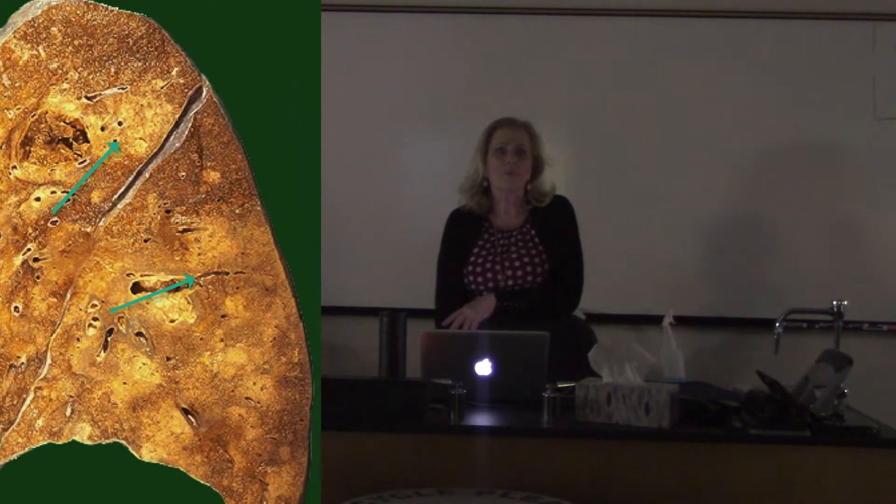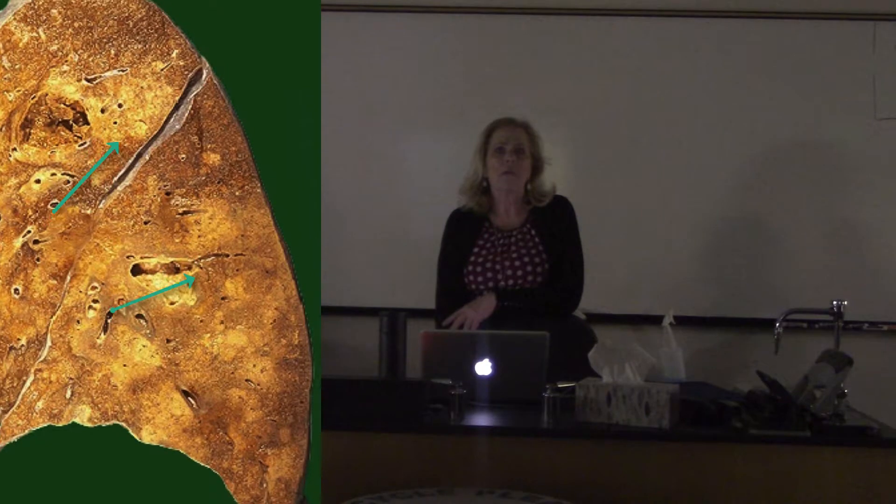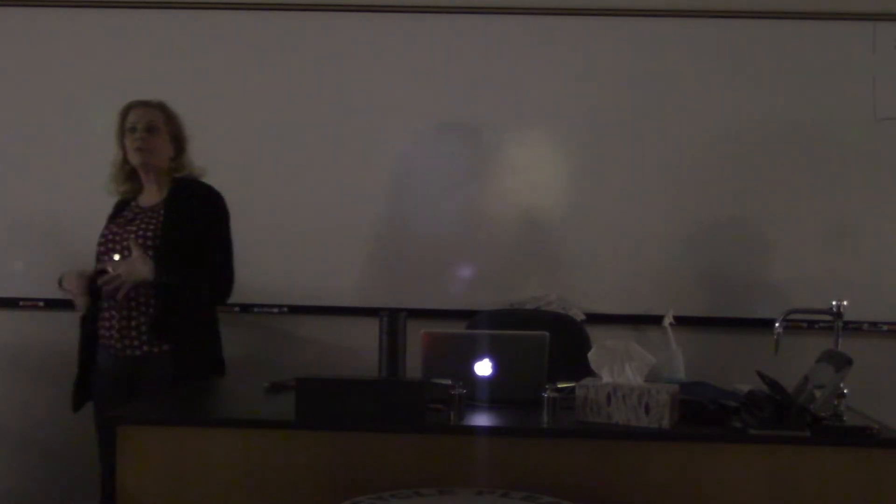This is liquefactive necrosis — it looks very different, without that gel-like appearance. This is a lung with liquefactive necrosis here and also here. Both of these are what we would call abscesses in the lungs — those regions have just turned to a liquidy type of center. Looking at that lung abscess, all these little black dots are macrophage moving into this area to dissolve all of that dead tissue. The lungs can't perform their appropriate function when this necrosis occurs.